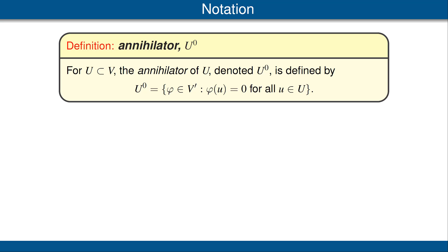We use the superscript 0 to remind us of the 0 that appears in the definition. Note that the annihilator of U is a subspace of the dual of V, so the annihilator of U depends upon V as well as upon U. However, we do not put V in the notation because our choice of V will always be obvious from the context.